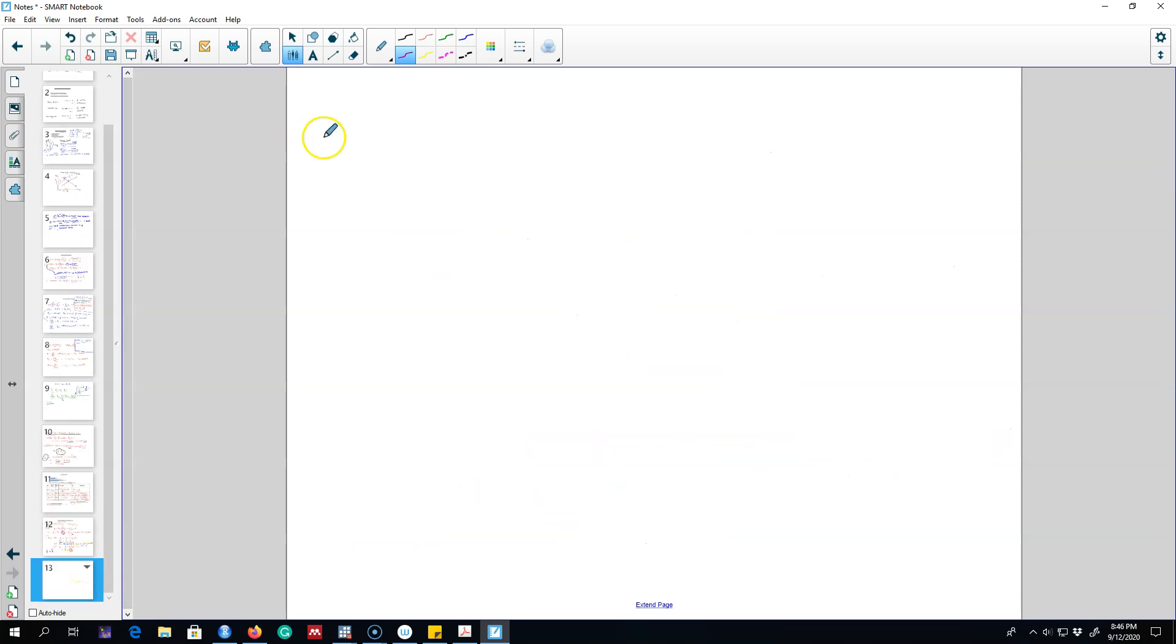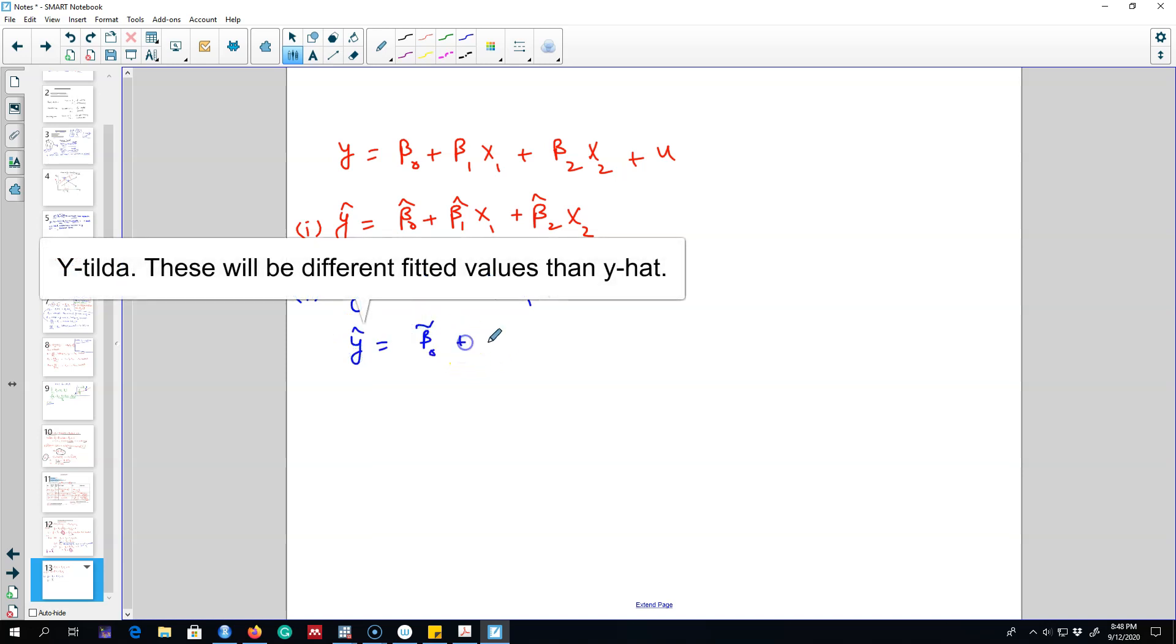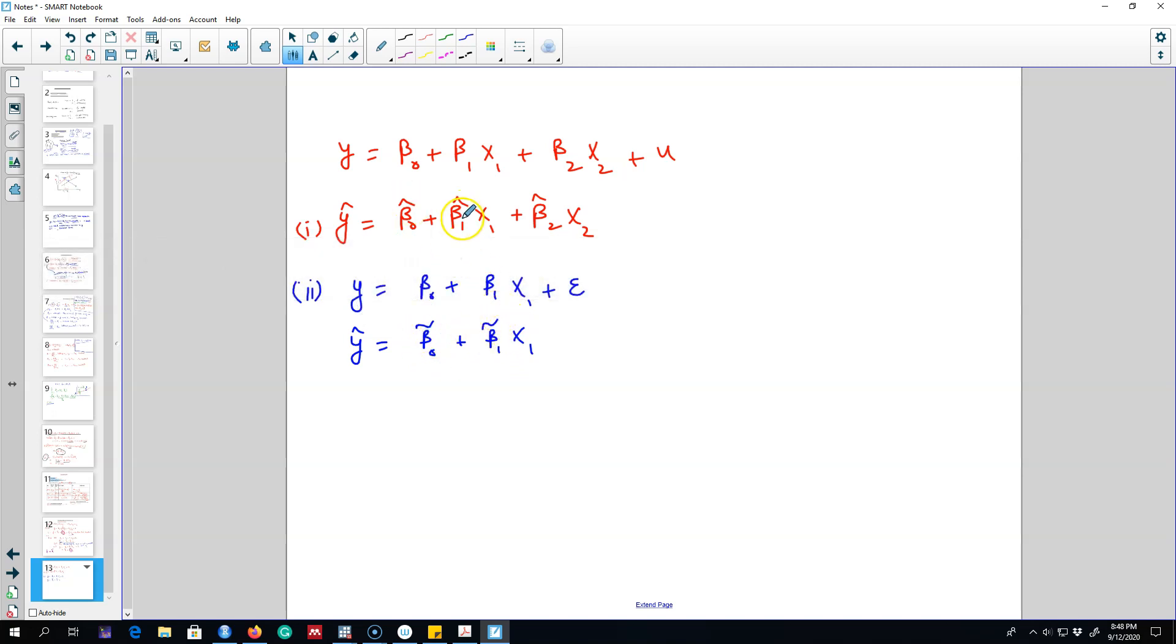We can regress this model in two ways. The first way is we can regress y variable on x1 and x2 and get the fitted values beta 0 hat plus beta 1 hat x1 plus beta 2 hat x2. Instead of doing that, we could regress this model beta 0 plus beta 1 x1 plus epsilon and get the fitted values beta 0 tilde plus beta 1 tilde x1. I call these estimated coefficients beta 0 tilde because this is a different model than beta hat.